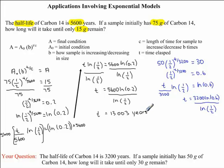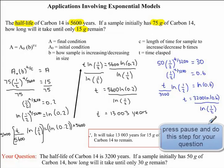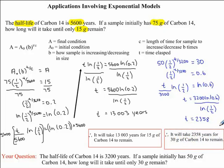Now lastly, we just need our concluding statement. Therefore, it will take 13,003 years for 15 grams of carbon-14 to remain. I would now like you to finish off the question you were given. Therefore, it will take 2,358 years for 30 grams of carbon-14 to remain.